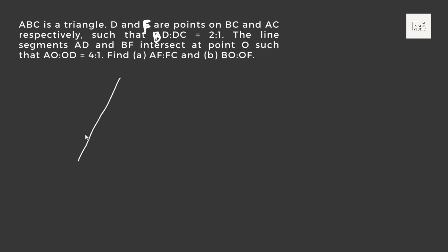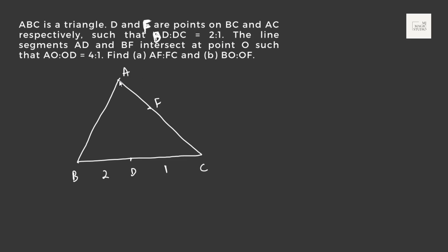ABC is a triangle. D and F are points on BC and AC respectively. BD:DC = 2:1. The line segments AD and BF intersect at point O such that AO:OD = 4:1. Find AF:FC, BO:OF. If we can find the mass points at A, B, C, D, and F, we can very easily answer any question related to ratios.